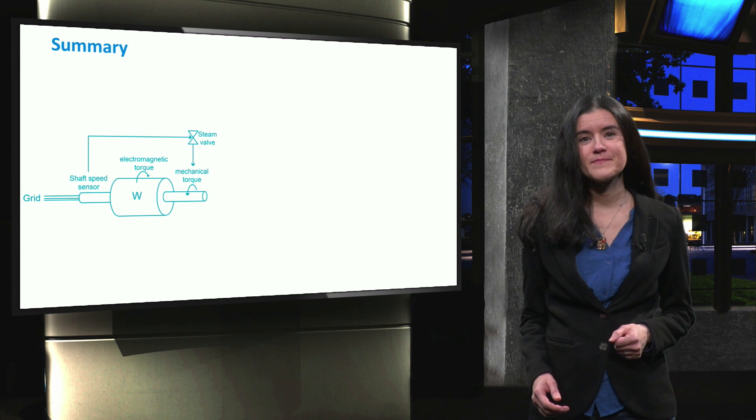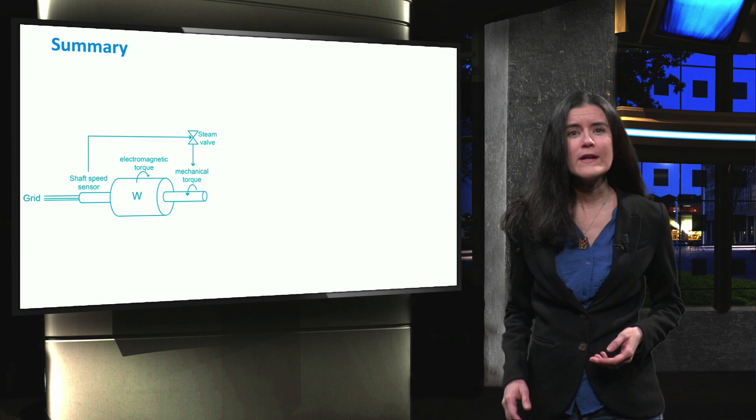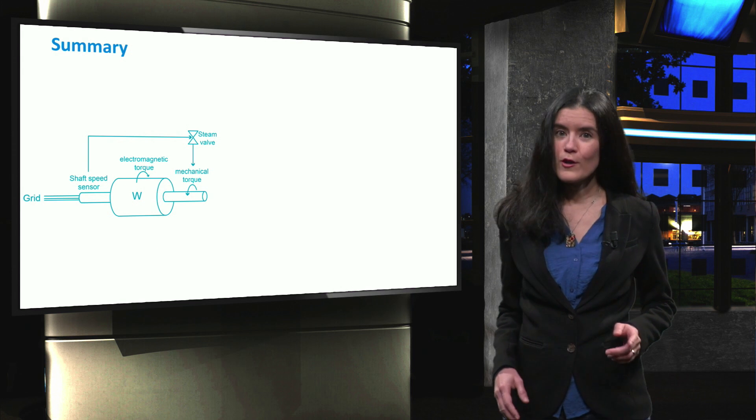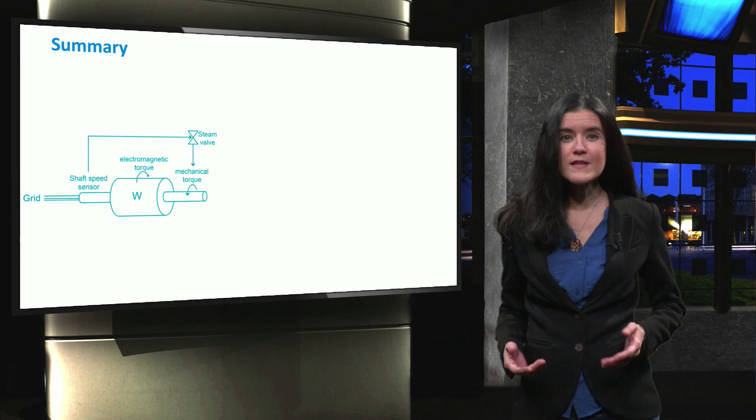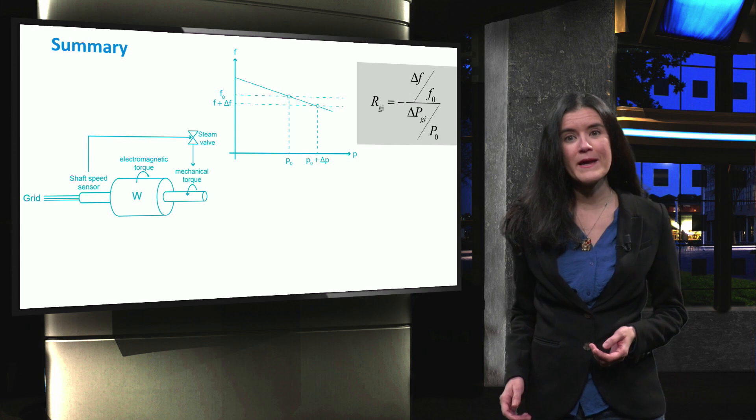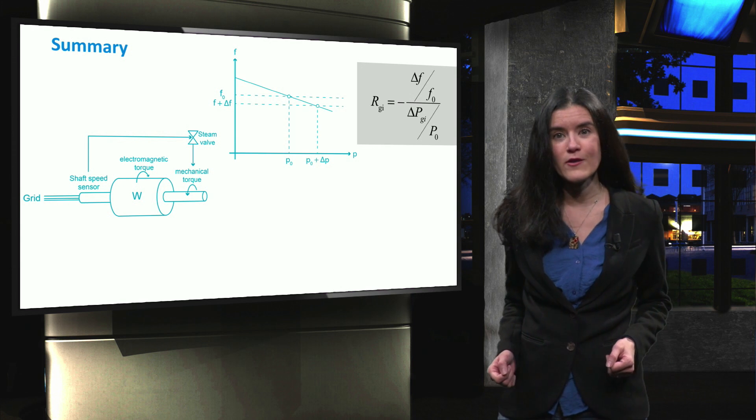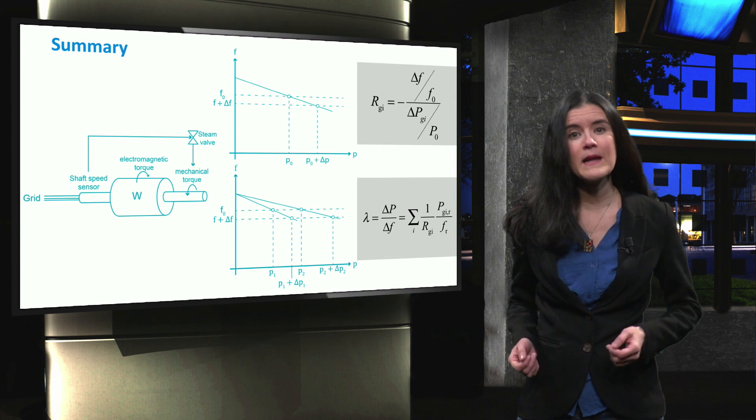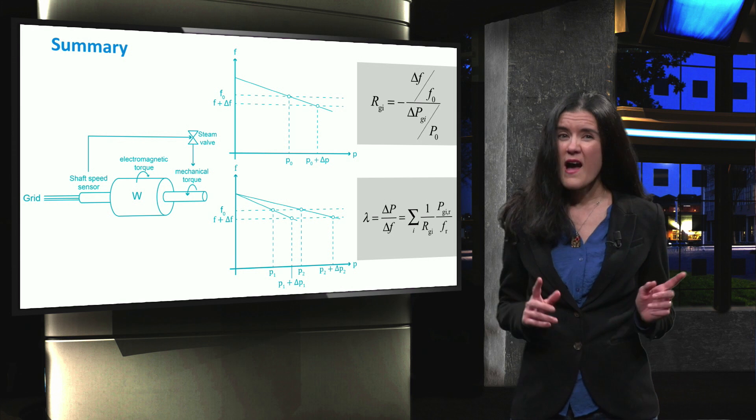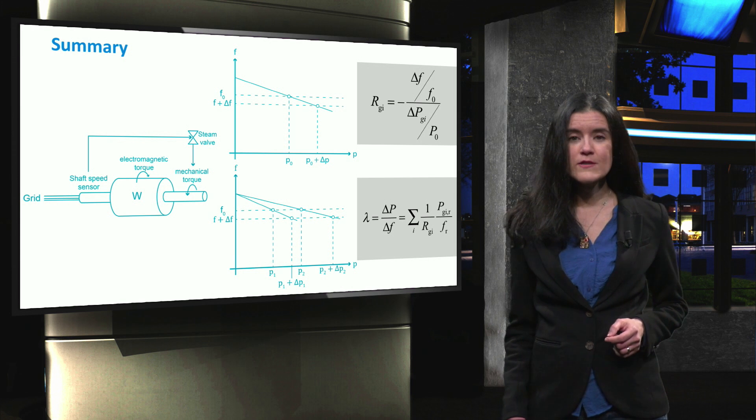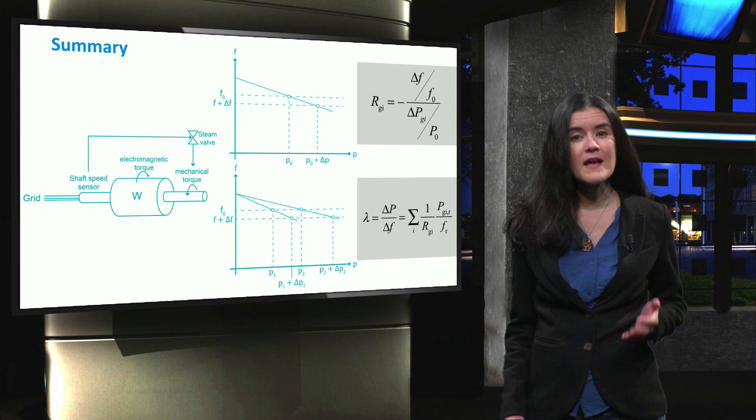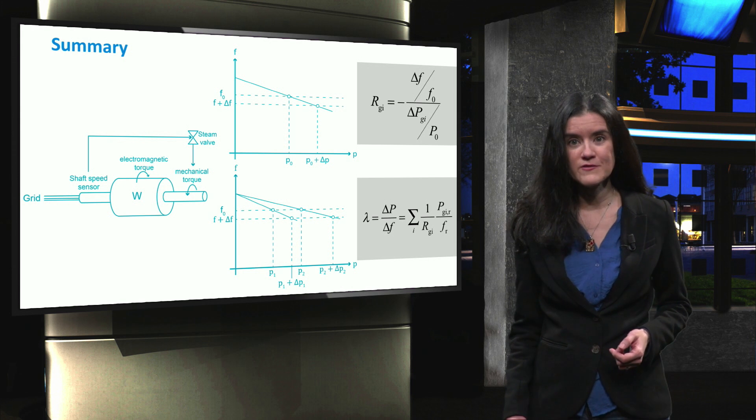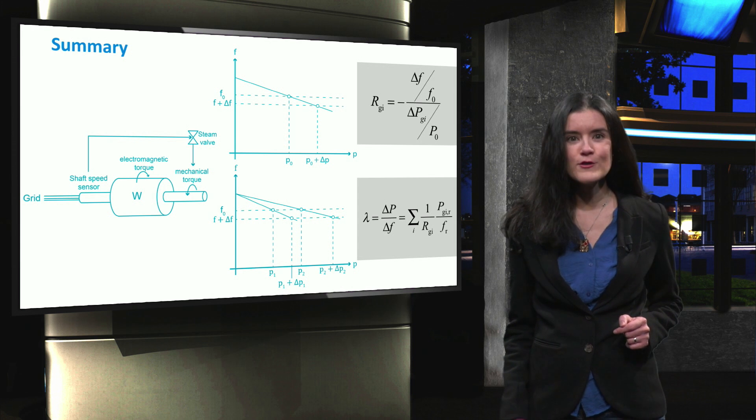So, let's now sum up. In this video, we looked at how primary control is performed in traditional power systems. We looked at how the speed governor worked and at the mathematical description of the primary control mechanism for single and multiple generator units. We learned that after primary control is applied, the power balance of the system is restored. However, under a different frequency. For this reason, after primary control has taken place, another mechanism is still necessary to restore the frequency back to its reference value. In the next video, we are going to talk about this mechanism.